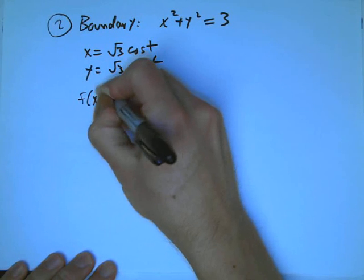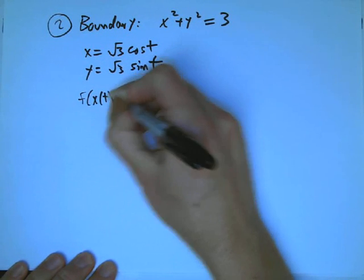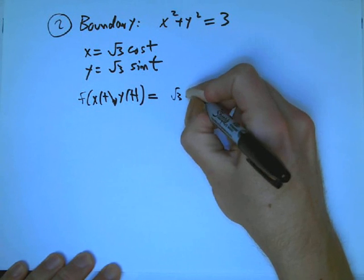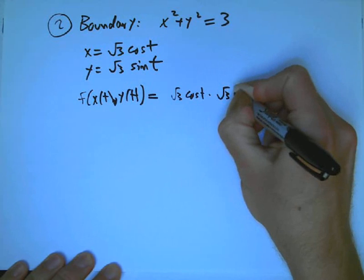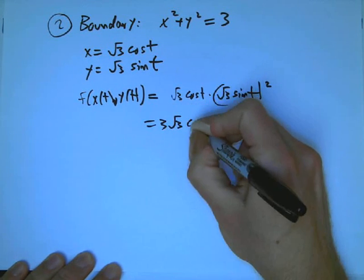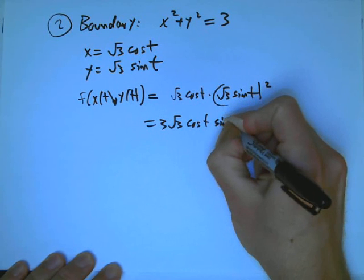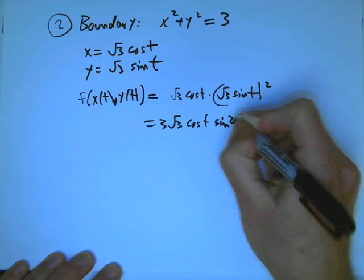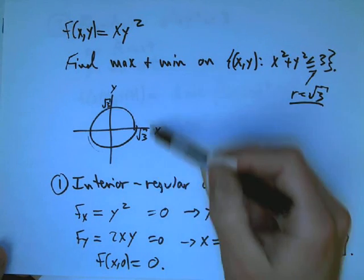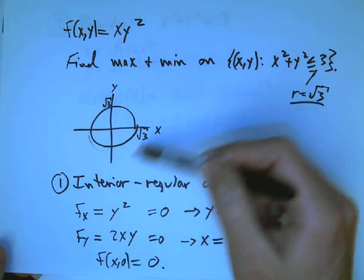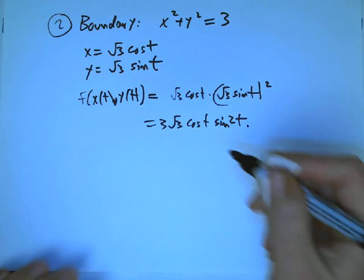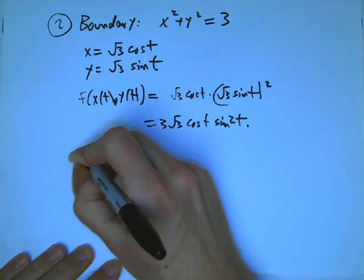So that takes it down to a function of one variable. So f of x of t, y of t, is going to be root 3 cosine t, times the quantity root 3 sine t squared. So 3 root 3 cosine t sine squared t. And so now that's just a function of t, and t goes from 0 to 2 pi. Or we really could let t be anything, and then it's just going to be a periodic function repeating over and over again on that circle.